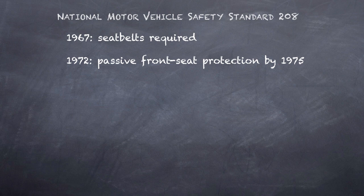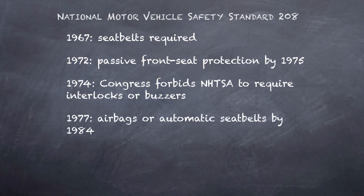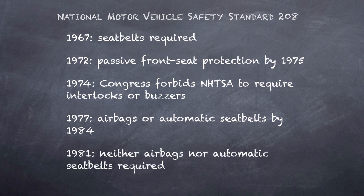The Secretary therefore in 1972 published a notice of a proposed rule to require so-called passive protection by 1975. There was vocal opposition from liberty-loving Americans, and in 1974 Congress enacted a law forbidding the Secretary to require use-compelling features like ignition locks and buzzers. In 1977, the Secretary promulgated a modified Standard 208 which required manufacturers to install either airbags or automatic seatbelts by 1984. The rule was upheld against legal challenges. In 1980, Ronald Reagan was elected president, and in 1981 the Secretary of Transportation appointed by President Reagan rescinded modified Standard 208 entirely. Neither airbags nor automatic seatbelts would be required — only the lap belts that had been required since 1967. This is the agency action that is the focus of the airbags case.